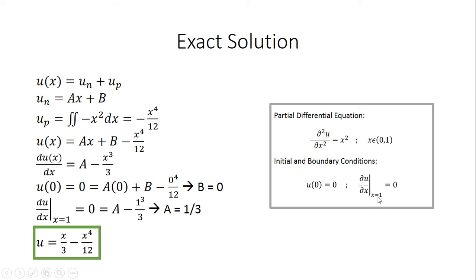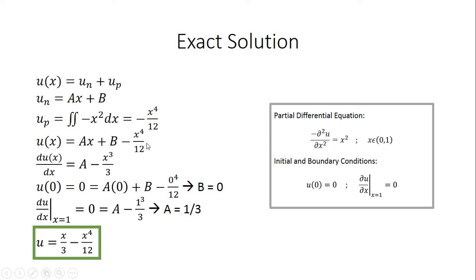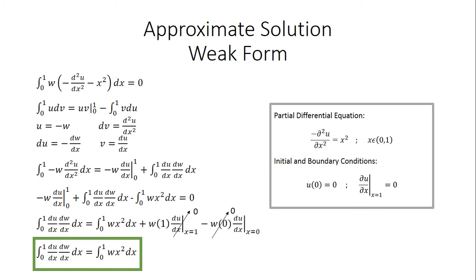Since our boundary condition involves the partial derivative of u with respect to x, we take that derivative and get a minus x cubed over 3. Now plugging in the initial condition u of 0 equals 0 gives us b equals 0. Plugging in the boundary condition — partial derivative of u with respect to x at x equals 1 equals 0 — gives us a equals 1/3. Substituting back, our exact solution is u equals x cubed over 3 minus x to the fourth over 12.